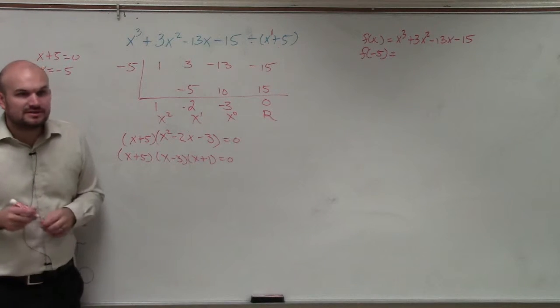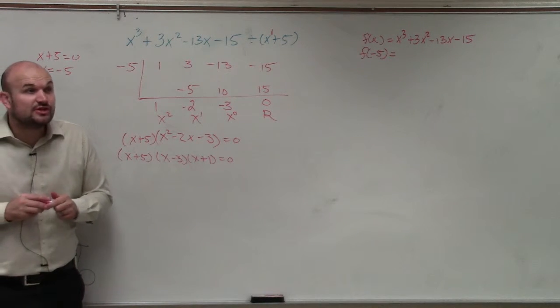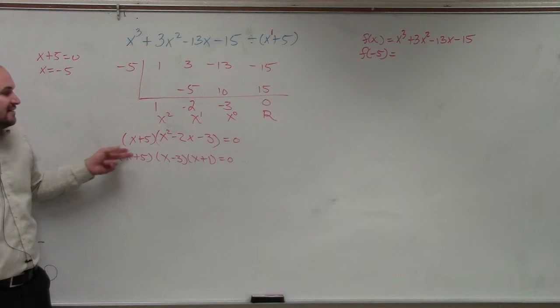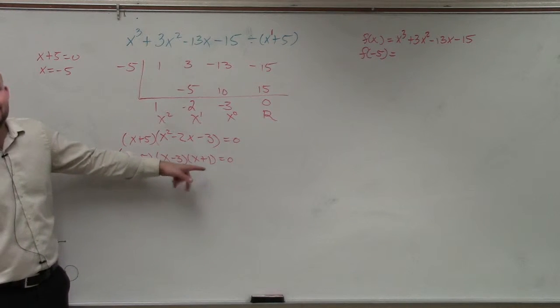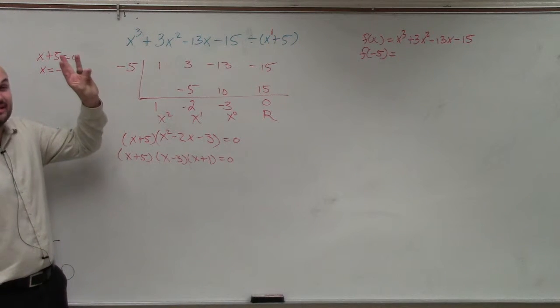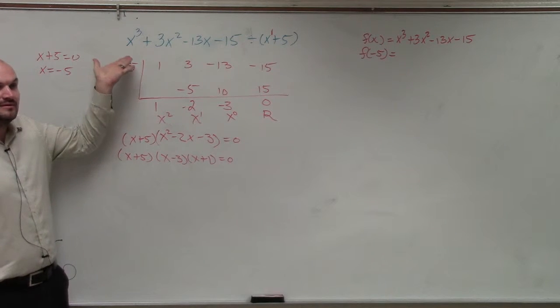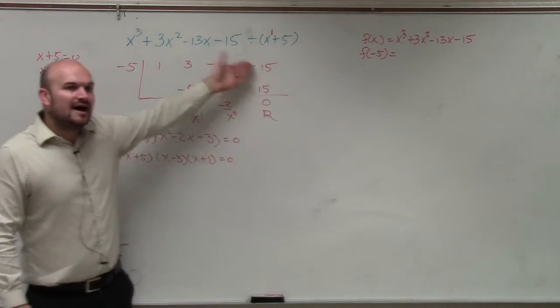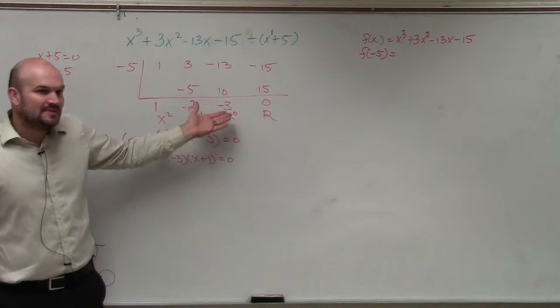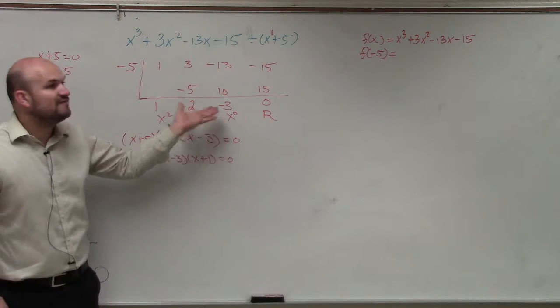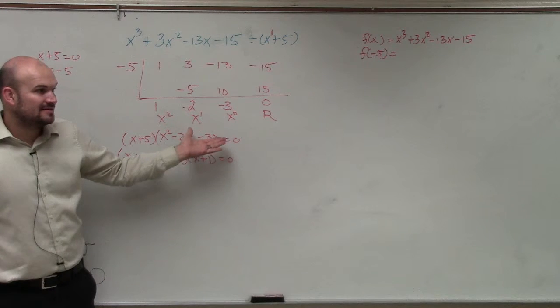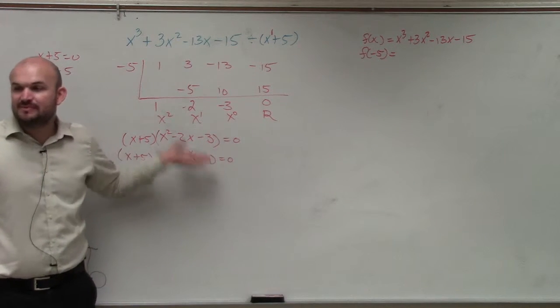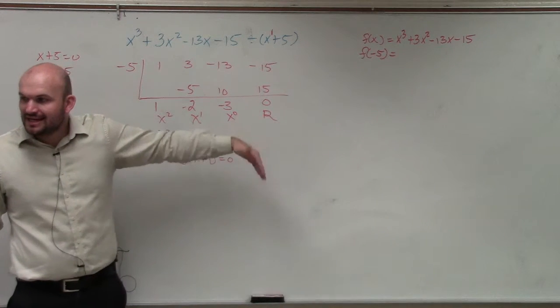Could I now find all the factors? Yeah, by using the zero product property, right? x equals negative 5, x equals 3, and x equals negative 1. That's three real zeros. How many zeros am I supposed to have? Three. So guess what? By using synthetic division, I can find the quotient, and then I can further factor down that to find the rest of the zeros, because the quotient is a factor.